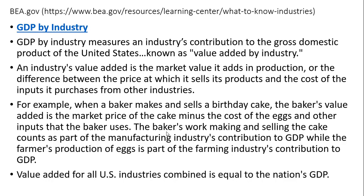An industry's value-added is the market value it adds in production, or the difference between the price at which it sells its product and the cost of the inputs it purchases from other industries. For example, when a baker makes and sells a birthday cake, the baker's value-added is the market price of the cake minus the cost of the eggs and other inputs the baker uses. The baker's work counts as part of the manufacturing industry's contribution to GDP, while the farmer's production of eggs is part of the farming industry's contribution to GDP. Value-added for all U.S. industries combined will equal the nation's GDP.